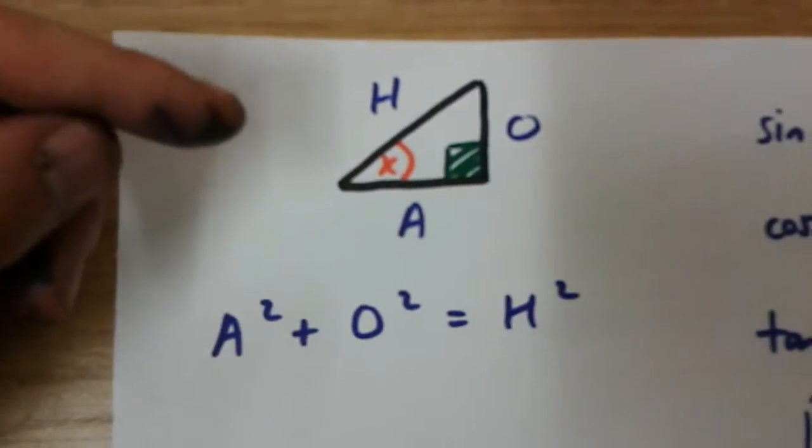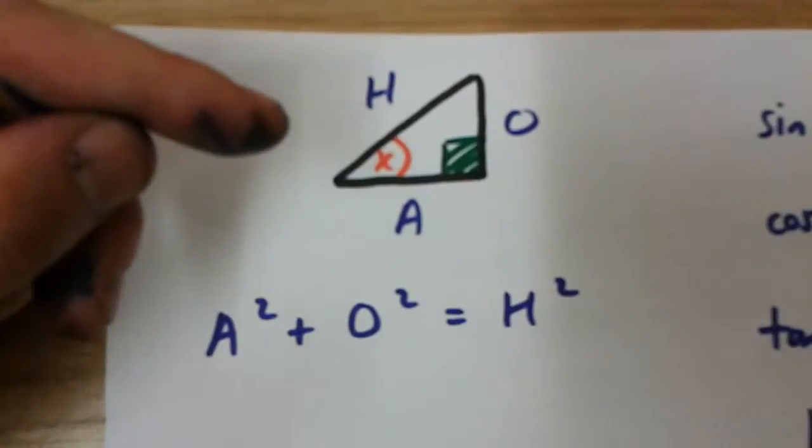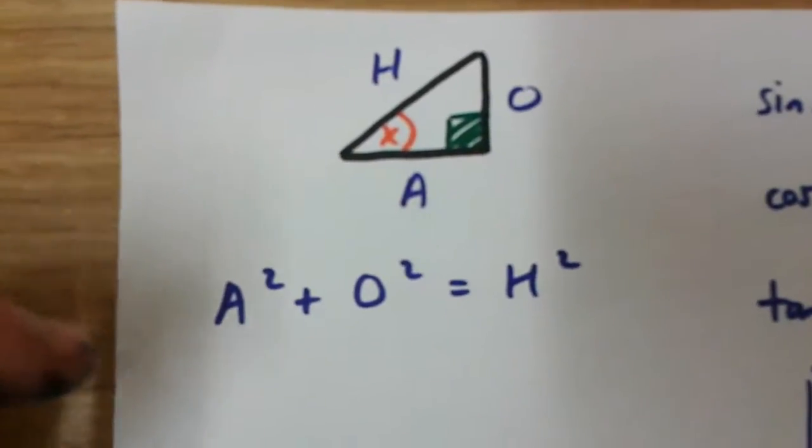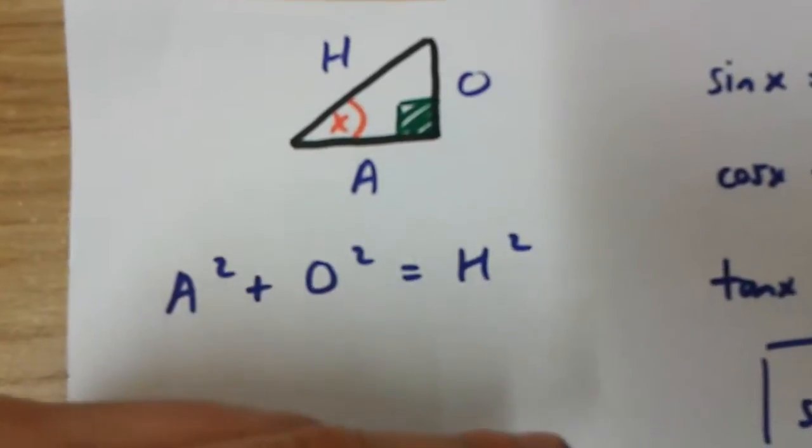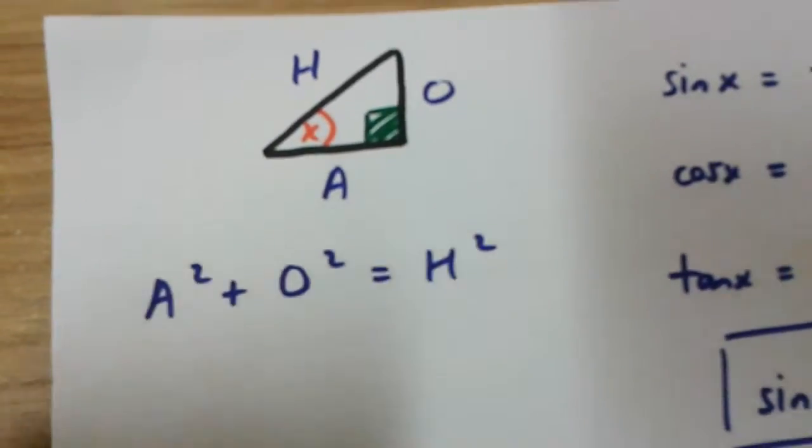By looking at this right angled triangle, you should know that a squared plus o squared is equal to h squared.